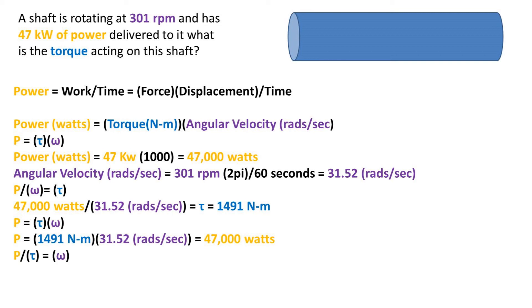Now to solve for the angular velocity, we take the power divided by torque. Plugging in our numbers, we get 31.52 radians per second. Multiplying this by 60 seconds, then dividing by 2 pi, we get 301 rpms.